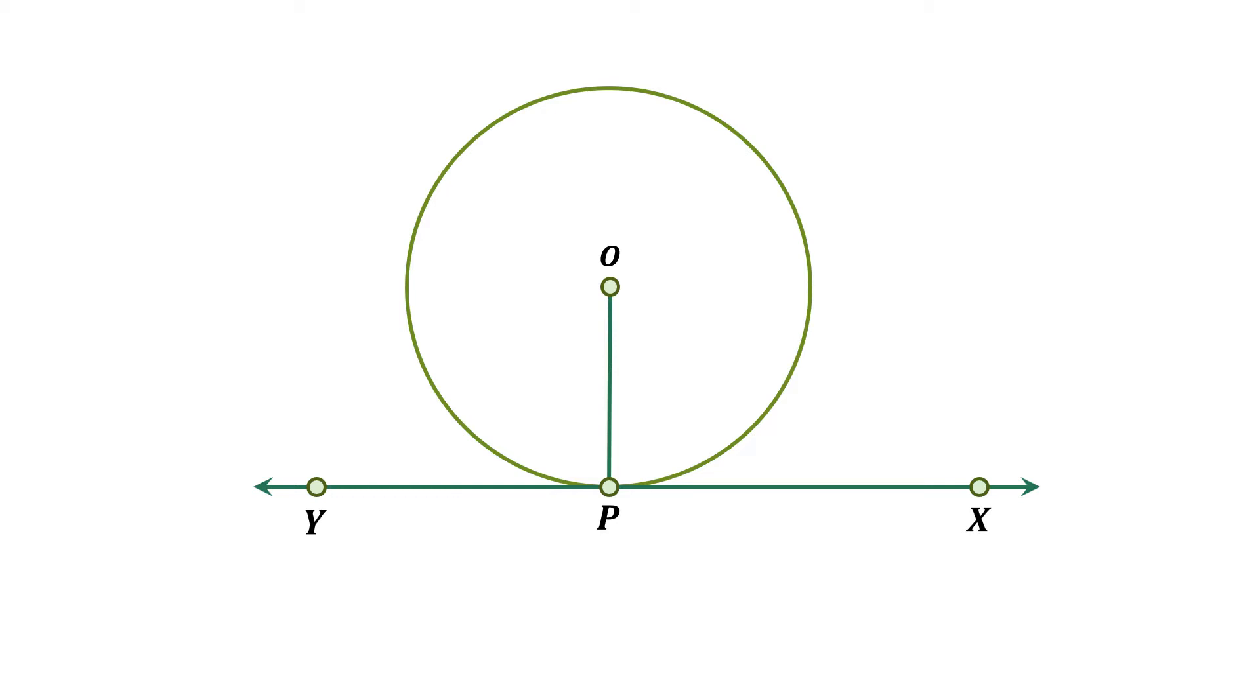A couple of seconds ago, we saw that if we take another point other than point P, for example, point Q, then OQ will be larger than the radius of the circle.